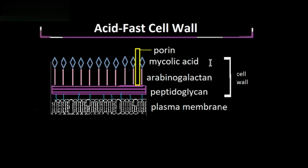Unique to the acid-fast cell wall is this layer of mycolic acid. These mycolic acids are long, fatty acids that form a waxy layer, making the acid-fast bacteria very resistant.